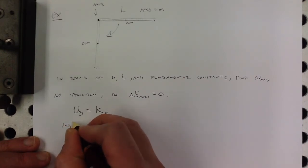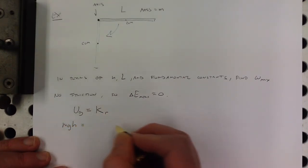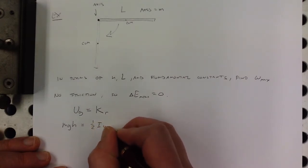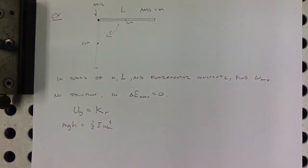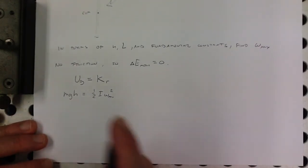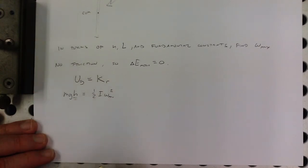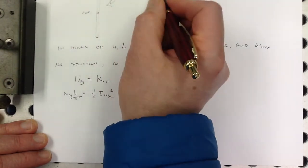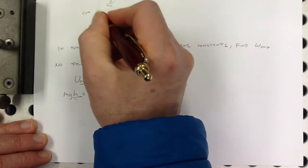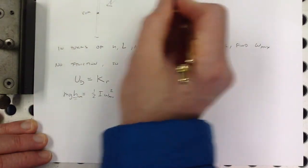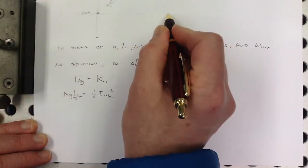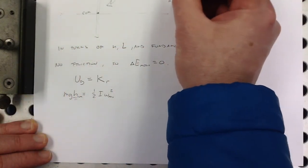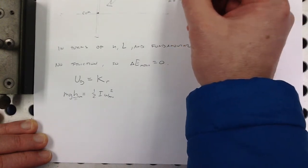So, that's mgh is equal to one half I omega squared. And I'm going to call this omega max. This isn't a hard problem to do. We just need to be very careful about what this h is. This is the height of the center of mass. The center of mass is not dropping the entire distance L. The center of mass is only dropping by L over 2. So, this h, the delta h of the center of mass is equal to L over 2.